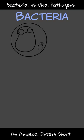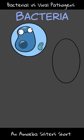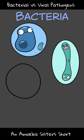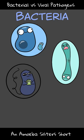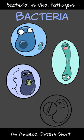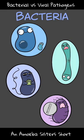Bacteria are cells, although they generally are smaller than your own cells. They can have a simple and fast way of reproducing by binary fission. Bacterial pathogens can produce toxins that are harmful. Depending on the type, bacterial infections may be destroyed by antibiotics.